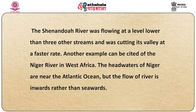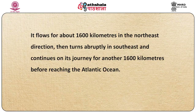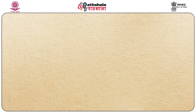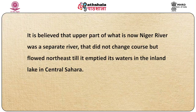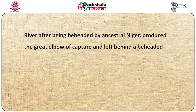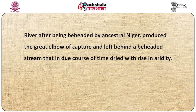Another example can be cited of the Niger River in West Africa. The headwaters of the Niger are near the Atlantic Ocean, but the flow of the river is inward rather than seaward. It flows for about 1,600 kilometers in the northeast direction, then turns abruptly southeast and continues for another 1,600 kilometers before reaching the Atlantic Ocean. It is believed the upper part of what is now the Niger River was a separate river that flowed northeast until it emptied into an inland lake in central Sahara. After being beheaded by the ancestral Niger, this produced the great elbow of capture and left behind a beheaded stream that in due course dried up with the rise in aridity.